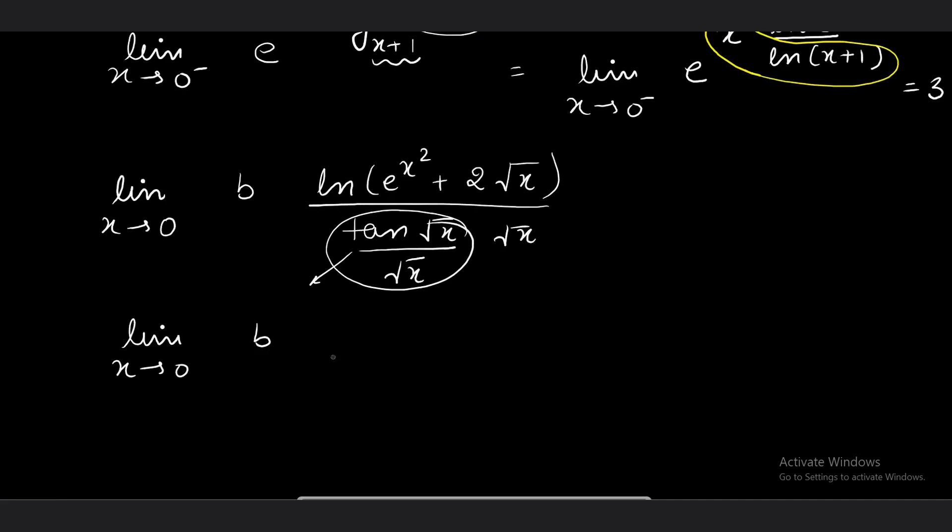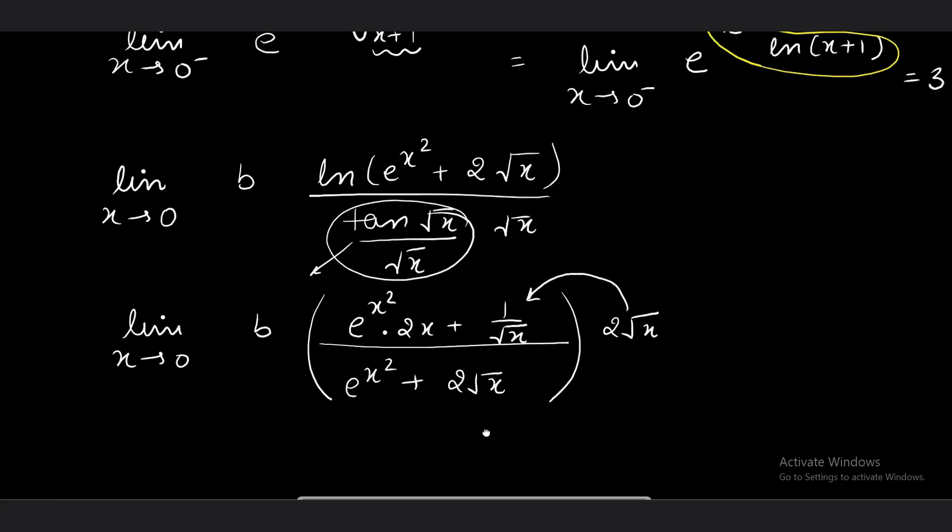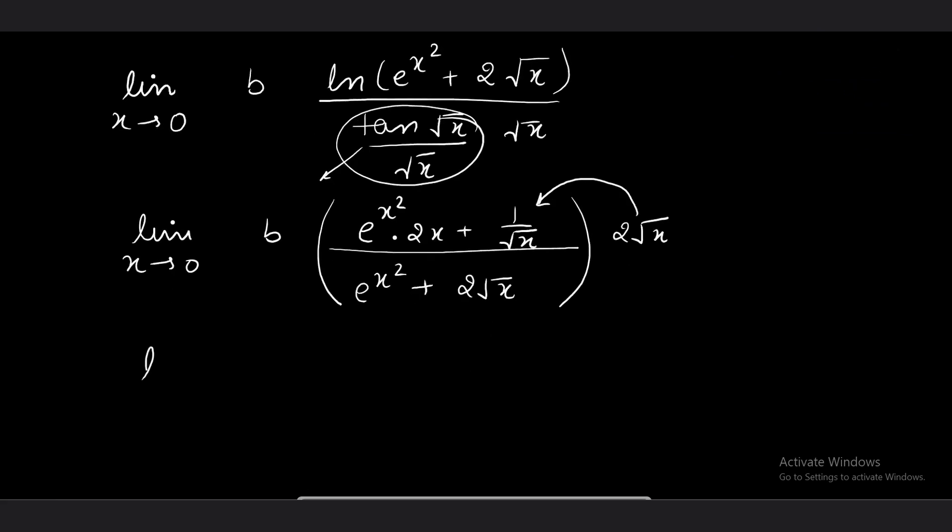Using L'Hôpital's rule, the derivative of ln is 1/(e^(x²) + 2√x) multiplied by the derivative of e^(x²), which is 2x × 1/(2√x). The denominator derivative of tan√x is 1/(2√x) sec²√x. I can write this 2√x inside the bracket in the numerator.